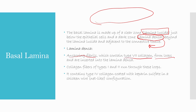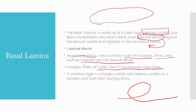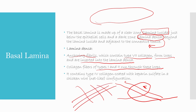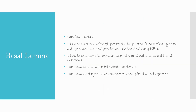The lamina densa contains anchoring fibrils of type VII collagen that form loops inserted into the lamina densa. Collagen fibers of type I and III run through these loops. It contains type IV collagen coated with heparin sulfate in a chicken wire-like configuration. The lamina lucida is a 20 to 40 nanometer wide glycoprotein layer containing type IV collagen and an antigen bound by antibody KF1.